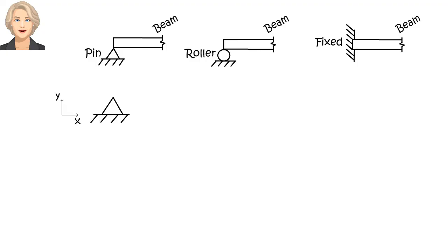There are two reaction forces associated with a pin support: a force in X direction and a force in Y direction. A roller support provides one reaction force only, a force that is perpendicular to the support surface. A fixed support has three reactions: a force in X direction, a force in Y direction, and a bending moment about Z axis.